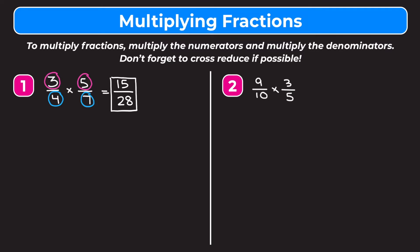Let's look at example 2, which is 9 tenths times 3 fifths. Again, we don't need a common denominator — we just multiply straight across. 9 times 3 is 27, and 10 times 5 is 50. We have 27 over 50, which cannot be simplified, so that's our final answer.